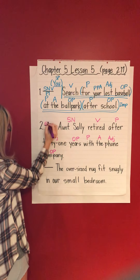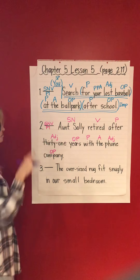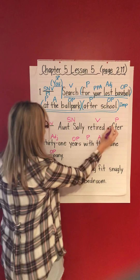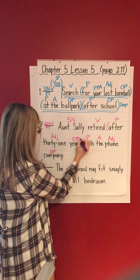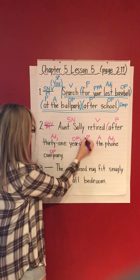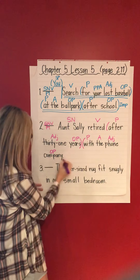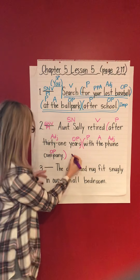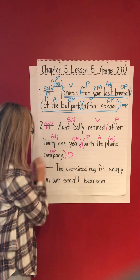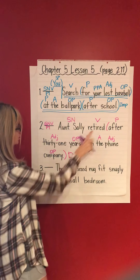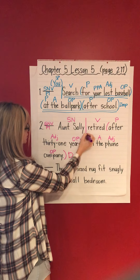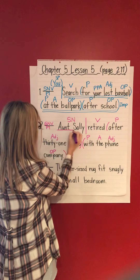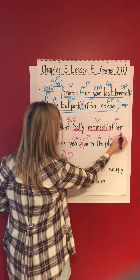Subject, noun, verb — pattern 1. Skill check: look for prepositional phrases. 'After 31 years' — prepositional phrase. 'With the phone company' — prepositional phrase. Period — and this is a statement, so it's a declarative sentence. Go back to the verb: retired. Divide the complete subject from the complete predicate. Underline the complete subject once and the complete predicate twice.